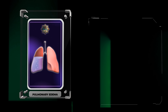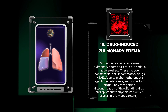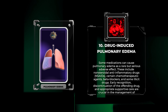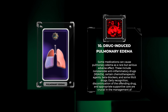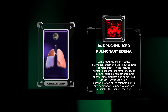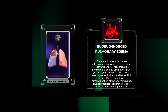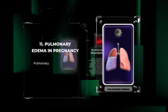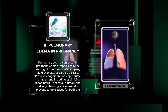Some medications can cause pulmonary edema as a rare but serious adverse effect. These include NSAIDs, certain chemotherapeutic agents, beta blockers, and some illicit drugs. Early recognition, discontinuation of the offending drug, and appropriate supportive care are crucial in the management of drug-induced pulmonary edema.